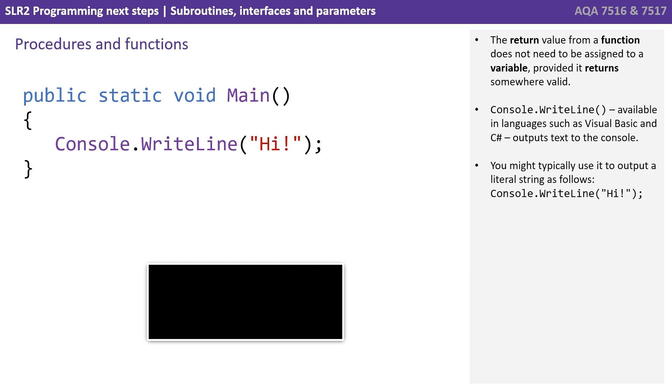The return value from a function does not need to be assigned to a variable, provided it returns somewhere valid. So here we're using console dot write line available in languages such as Visual Basic and C sharp to output text to a console. You might typically use it to output a literal string such as follows, console dot write line, hi.